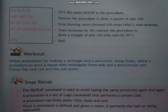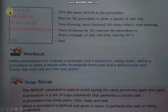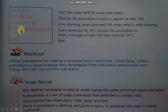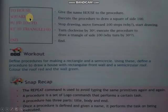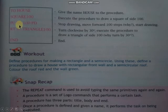Let's see. First हम यहाँ पर procedure create करते हैं जिसका name है HOUSE: TO HOUSE, then SQUARE 100 — यहाँ पर जो procedure हमने create की उसके अंदर हमने दो procedures use की जो हमने already define की थीं। SQUARE 100 से हमारा 100-side square draw हो जाएगा। Then PU — Pen Up, FD 100 — turtle 100 steps forward move होगा। Then PD — Pen Down.